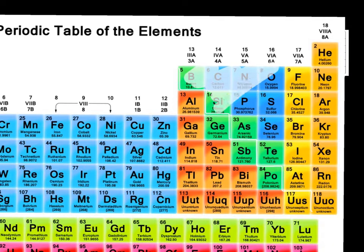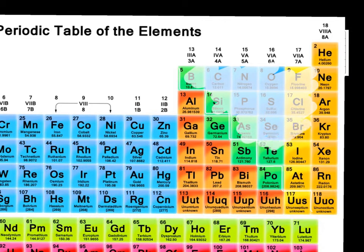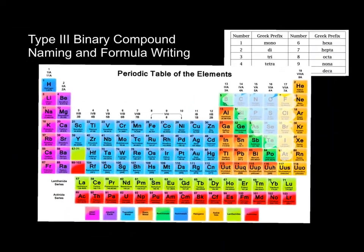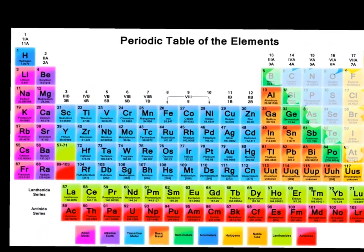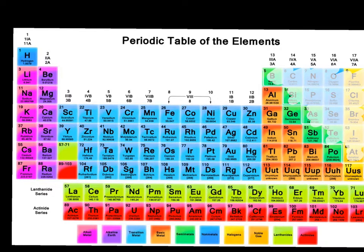The semi-metals are involved in there and will sometimes form type 3 compounds. The other element that will also form type 3 compounds is hydrogen, which is way over on the other side of the periodic table.